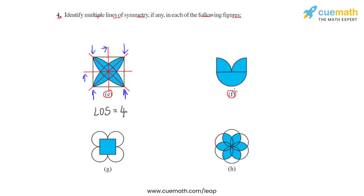In figure F we see a symmetric figure that we can divide into two equal halves by drawing one line. If we fold the figure along this line, both equal halves coincide. So we get only a single line of symmetry — that is one — for this particular figure.